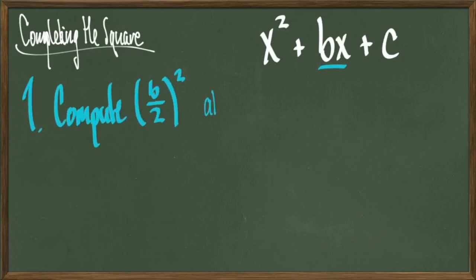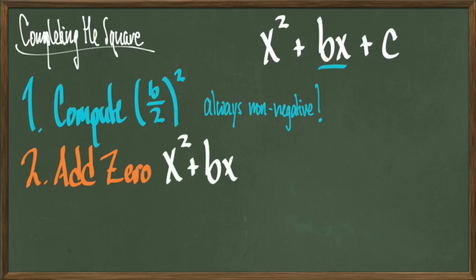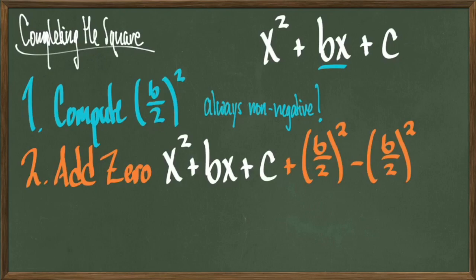The first step of completing the square is to compute (b/2)². In other words, take the coefficient of x, divide it by 2, and then square it. And you'll always end up with a non-negative number. The next step is to add 0. And 0 comes in the form of (b/2)² - (b/2)². So in the previous slide, b was equal to 4, and then (b/2)² was also equal to 4. So that's where I got 4 - 4 in replacement of 0 from.